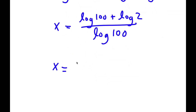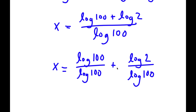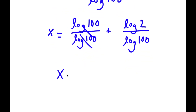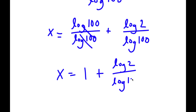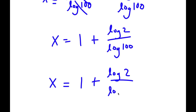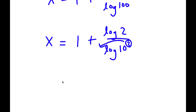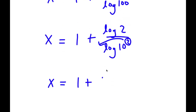This is the same as log 100 over log 100 plus log 2 over log 100. Log 100 over log 100 cancels to 1, so x equals 1 plus log 2 over log 100. Now log 100 is the same as log of 10 squared, and moving the exponent to the front gives 1 plus log 2 over 2 times log 10.